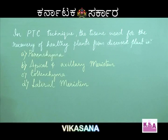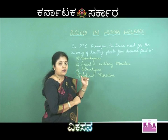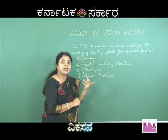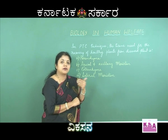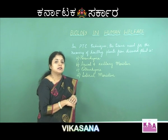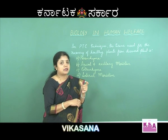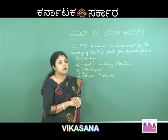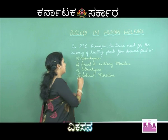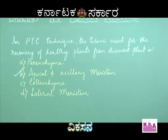So for obtaining disease-free plants or to recover healthy plants from a diseased plant, it is always the apical meristem or the axillary meristem which is chosen for the technique. Therefore option B is the right answer.